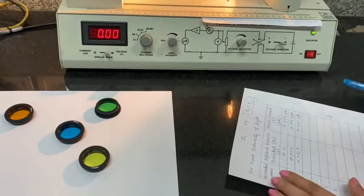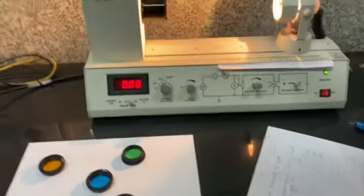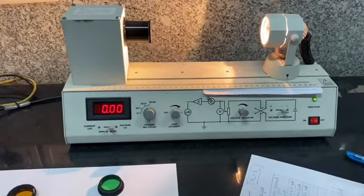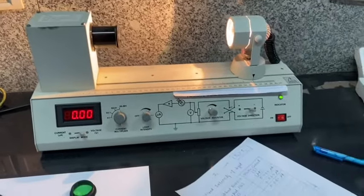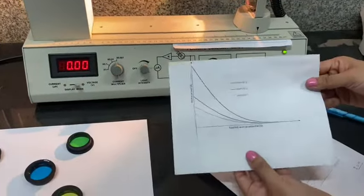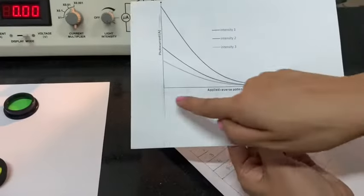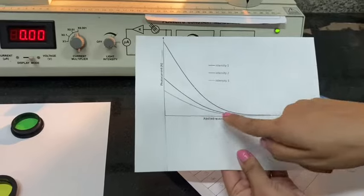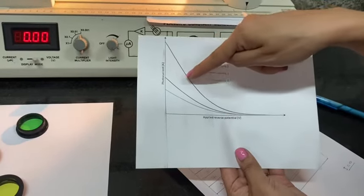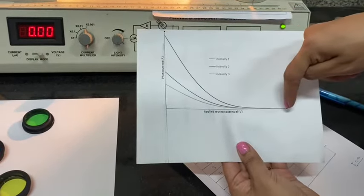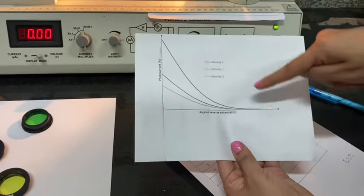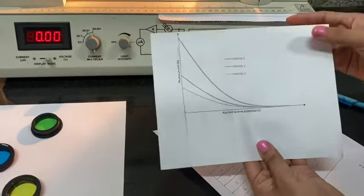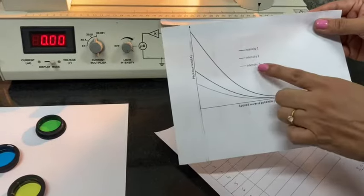We can tell how intensity is changing by looking at the brightness of the light source. Repeating the same procedure and plotting the graph, we get curves for different intensities. At zero applied potential, current is maximum; as reverse potential increases, current decreases to zero. Readings are taken from maximum to minimum, giving the graph for different intensities of light.